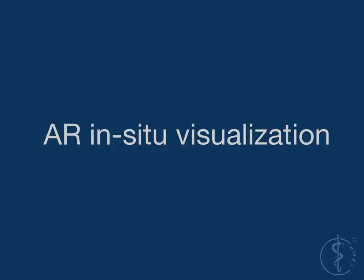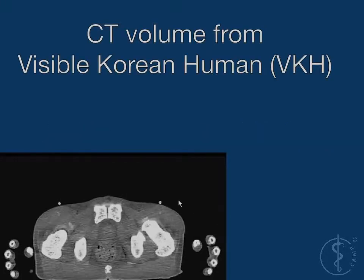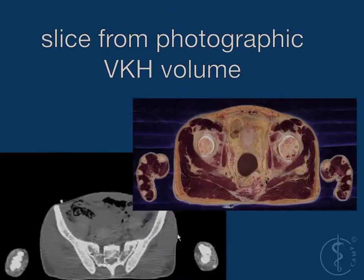To get this visualization we use a very special dataset, the Visible Human. This dataset consists of a CT volume and photographic slices.